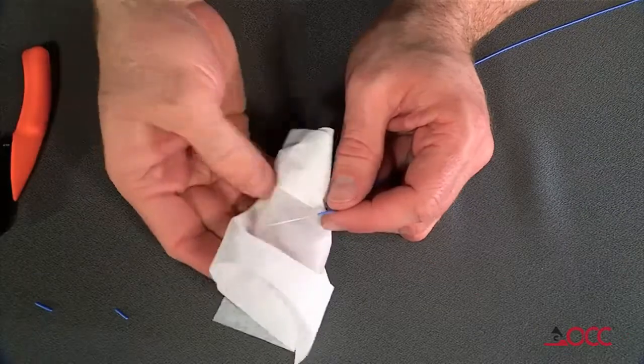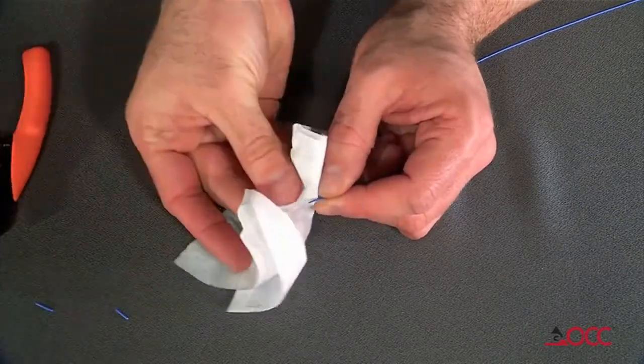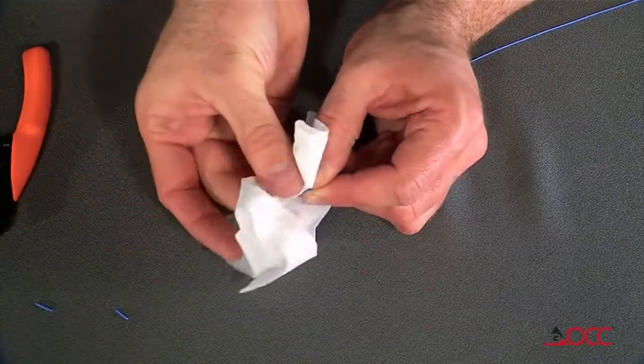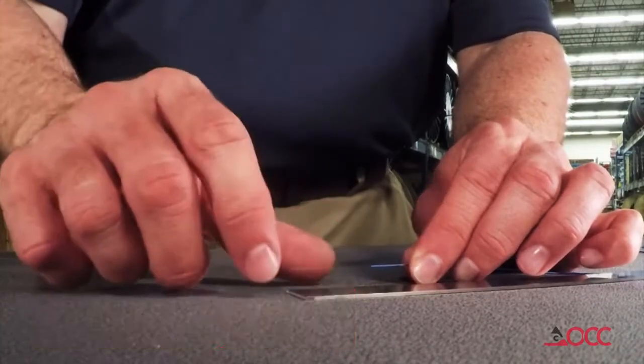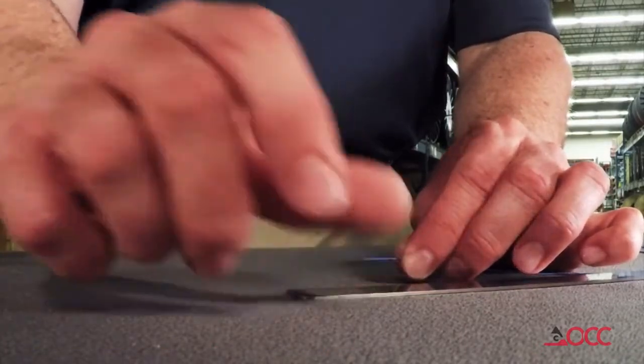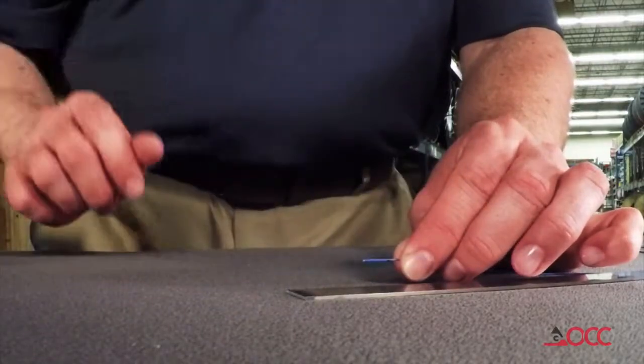Clean the stripped fiber with an alcohol wipe and remove any debris. Check the fiber integrity by bending the stripped end slightly at 60 degrees. If the fiber was nicked during stripping, it will likely break during this bending.